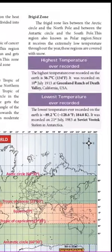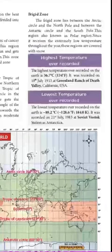The next zone is the frigid zone. This zone lies between the Arctic Circle and the North Pole in the northern hemisphere, and between the Antarctic Circle and the South Pole in the southern hemisphere. Here we cannot expect much sunrise. This region receives only low temperatures and is very cold — it will be covered fully with snow.